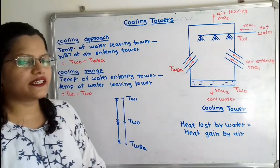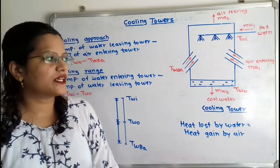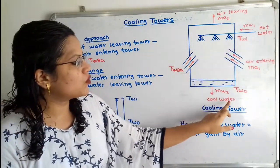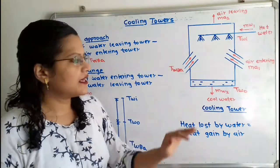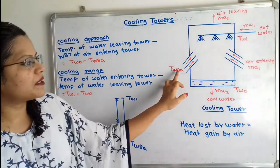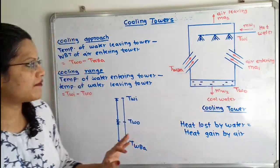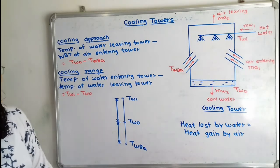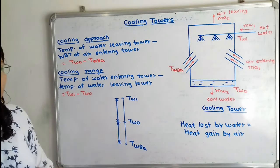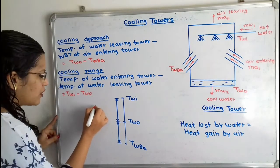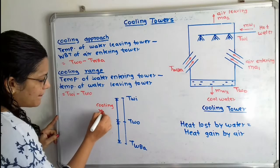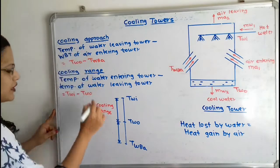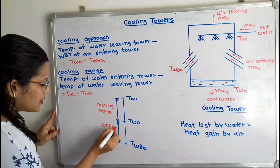If we plot these three temperatures, the hot water has the highest temperature (TWI). Lower than this is the cold water leaving the cooling tower (TWO). Then we have the wet bulb temperature of air (TWB-A). The difference between inlet water temperature and outlet water temperature is known as cooling range, and the temperature difference between outlet water and wet bulb temperature of air is known as cooling approach.